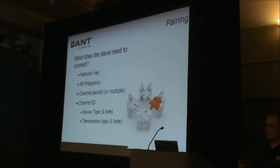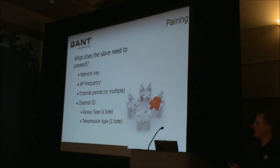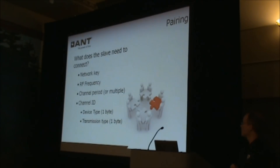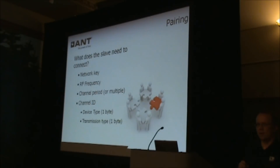There is another byte reserved for transmission type. There's no great definition for it, but basically transmission type defines how the data within the ANT packet is actually structured. Transmission type doesn't change very much — there's only one value currently defined — and it's another value defined by AntPlus and by the device profiles.